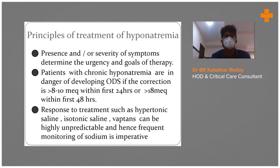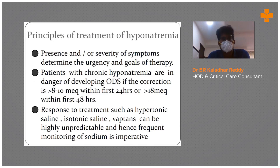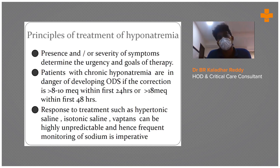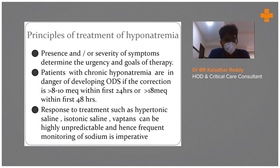How do you treat a patient with hyponatremia? Patients with chronic hyponatremia are in danger of developing osmotic demyelination syndrome if the correction is more than 8 to 10 milliequivalents within the first 24 hours, or more than 18 milliequivalents within 48 hours. We don't always know which patients will develop ODS — osmotic demyelination syndrome.